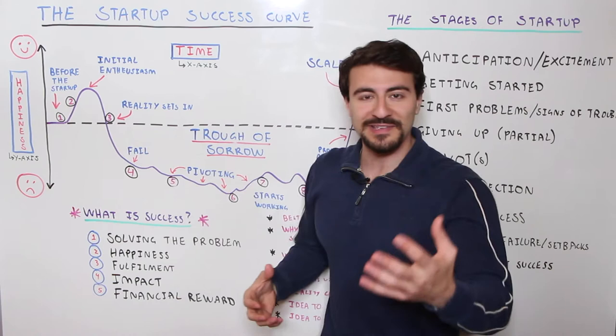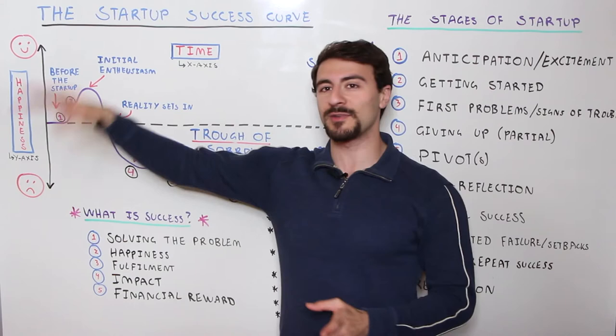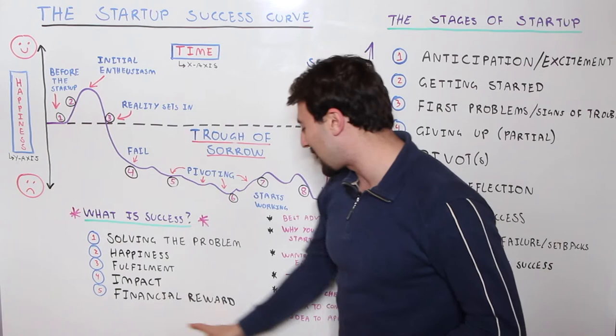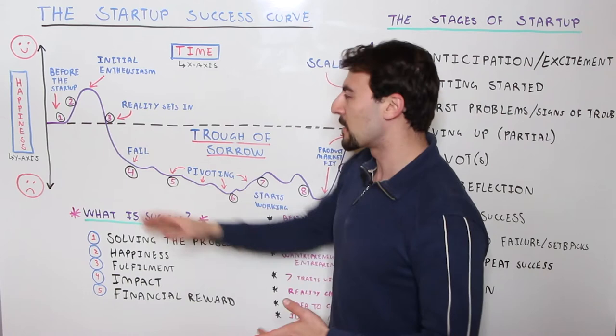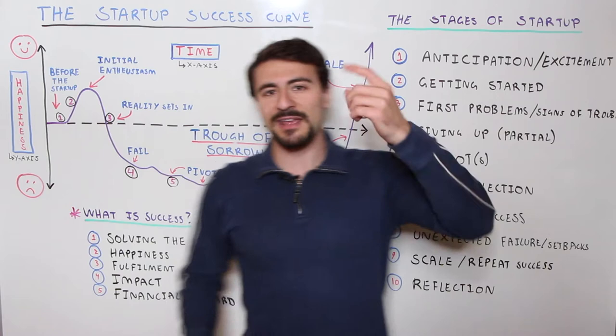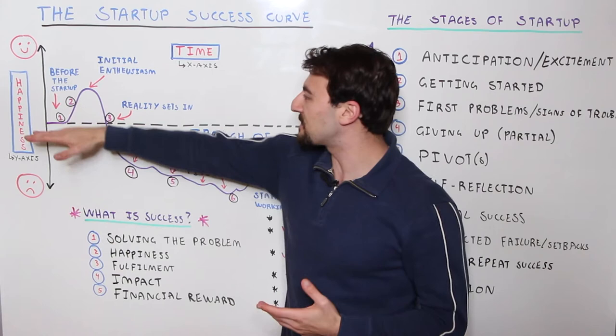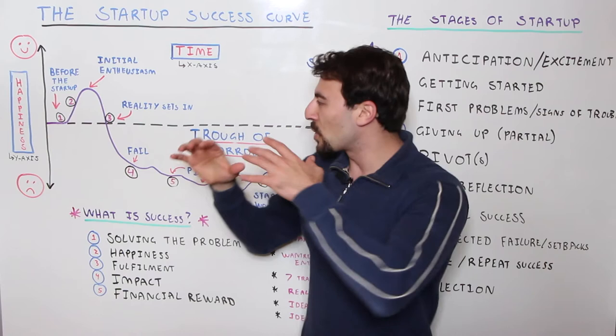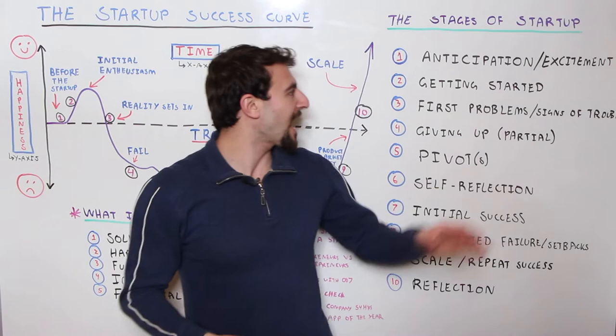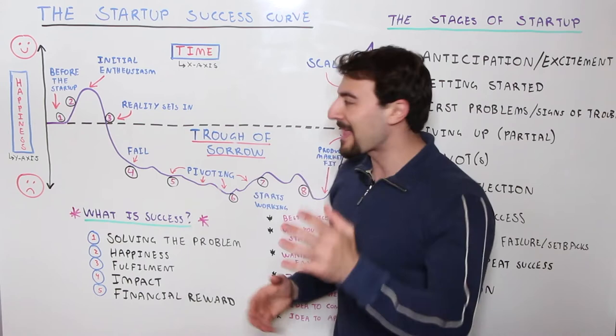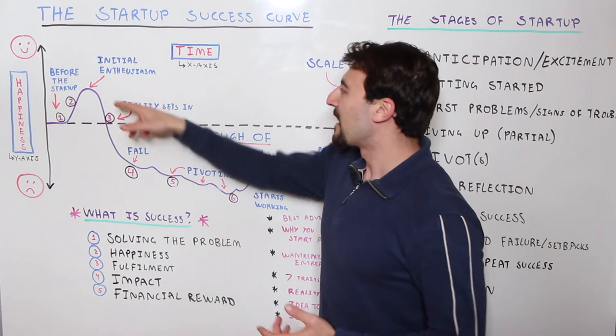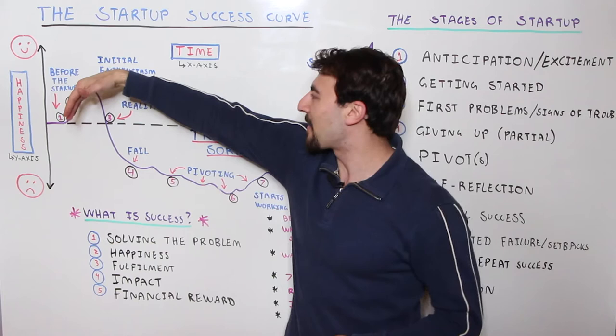Then your happiness actually goes up. Step number two is getting started. We have this initial enthusiasm, and relative to zero, as time goes on and you just get started, you're going to increase your happiness because you start putting things into action. You're going to put your foot out the door and actually make something happen — and that is really exciting. Unfortunately it doesn't last very long. Your initial enthusiasm starts to asymptote and then curve down, and reality starts to sink in.